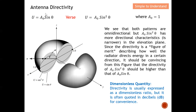For example, let's compare A₀·sinθ versus A₀·sin²θ, assuming A₀ equals one. Both patterns are omni-directional, meaning they radiate 360 degrees. The sin²θ pattern is shown as a black solid line, while sinθ corresponds to a circle. Both patterns are omni-directional, but sin²θ shows more directive characteristics in the elevation plane.